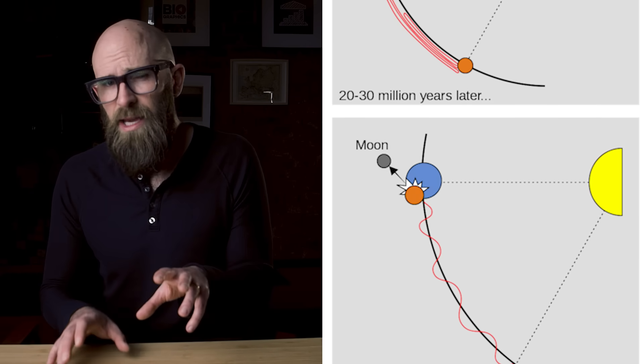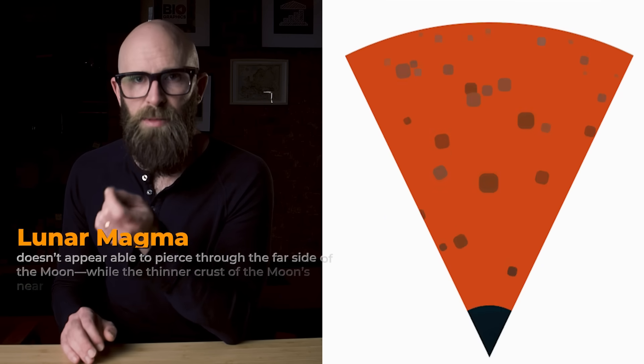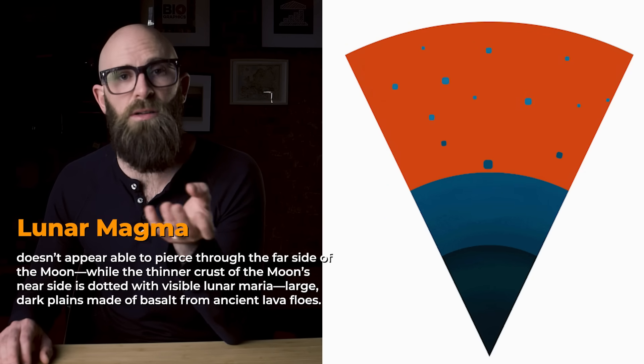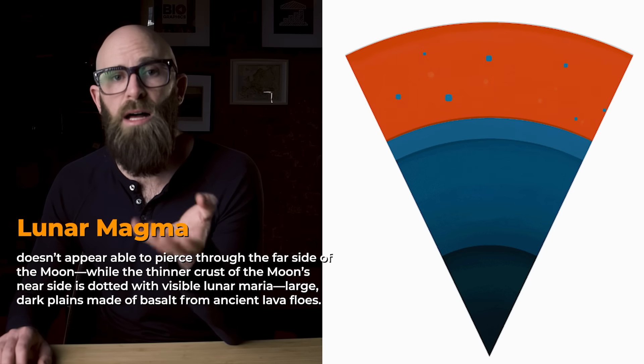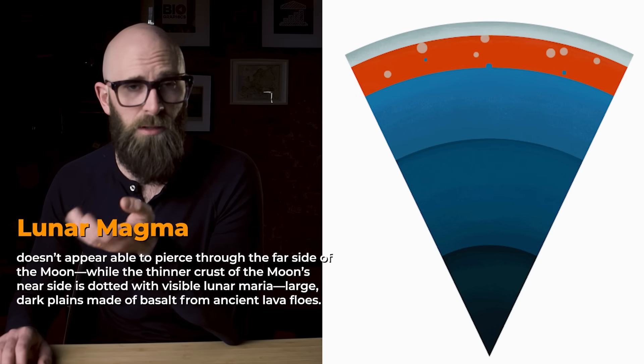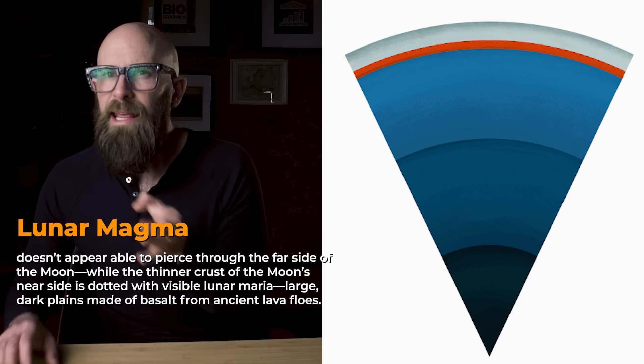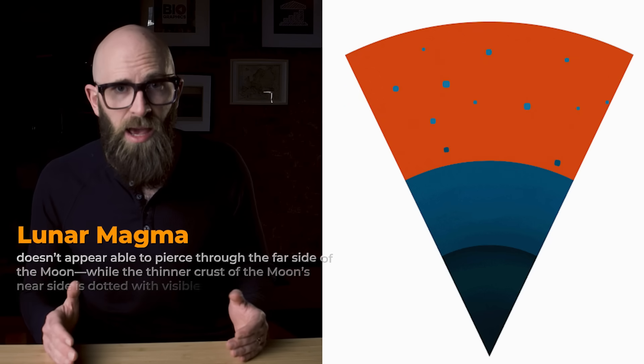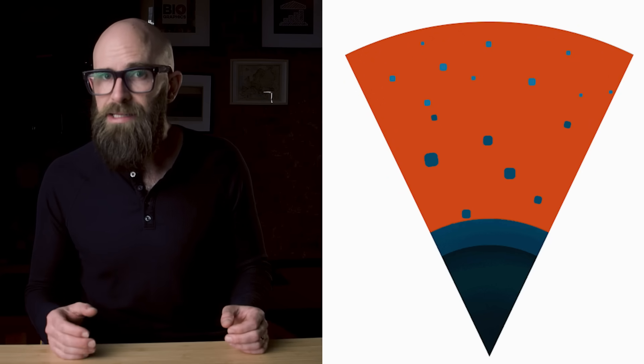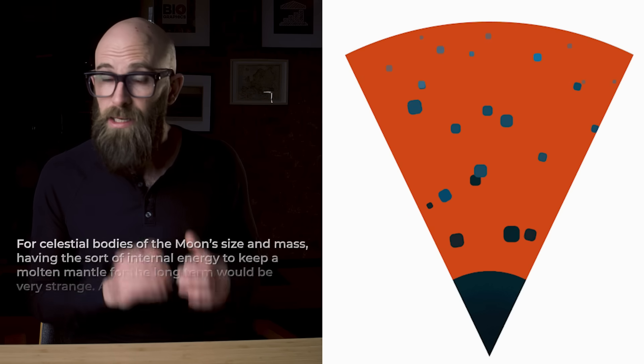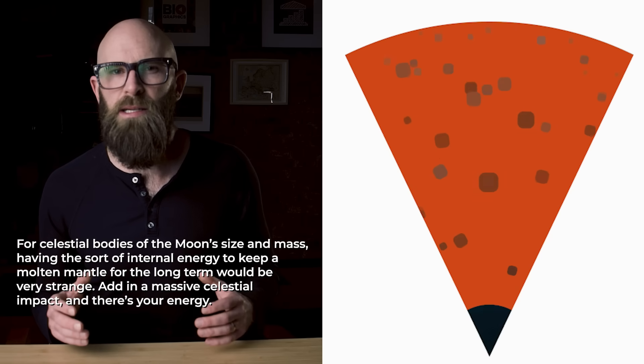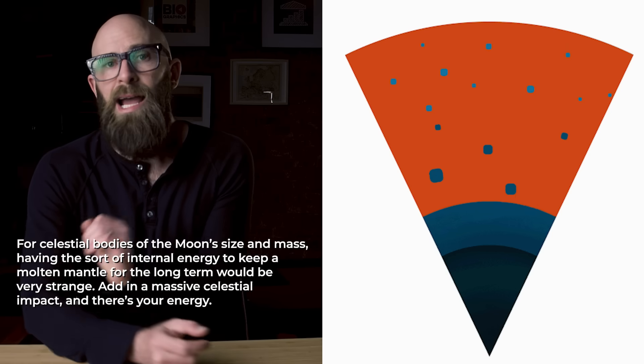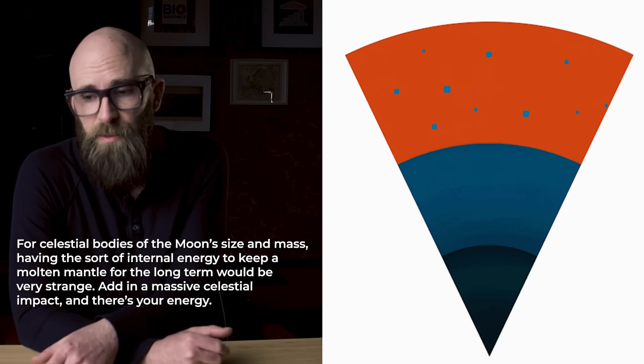Further evidence that this might be the case is that lunar magma doesn't appear able to pierce through the far side of the moon while the thinner crust of the moon's near side is dotted with visible lunar maria large dark planes made of basalt from ancient lava flows. And even the simple fact that the moon has a molten internal element at all and the geologic evidence that it was at one point molten on its surface shouldn't be possible. For celestial bodies of the moon's size and mass, having the sort of internal energy to keep a molten mantle for long term would be very strange. Add in a massive celestial impact, well, there's your energy.